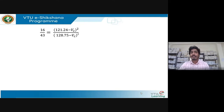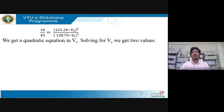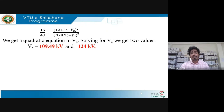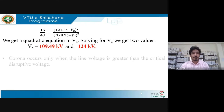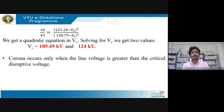Substituting the known values yields a quadratic equation in V_c. Simplifying the quadratic equation gives two values of V_c: 109.49 kV and 124 kV. Since a quadratic equation produces two roots, we must determine which one is physically valid.